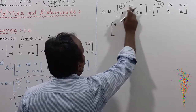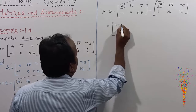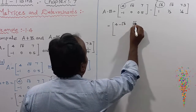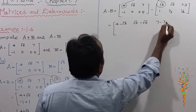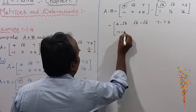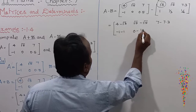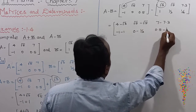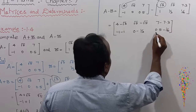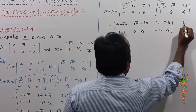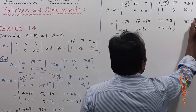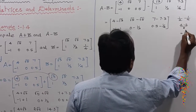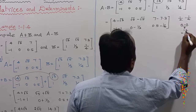Computing element-wise: first row, first column: 4 minus √3. Second: √5 minus √5 equals 0. Third: 7 minus 7.3 equals minus 0.3. Second row: minus 1 minus 1 equals minus 2. Then 0 minus 1/3 equals minus 1/3. Then 0.5 minus 1/4: since 0.5 equals 1/2, we get 1/2 minus 1/4 equals 2/4 minus 1/4 equals 1/4.